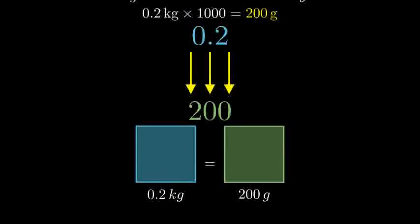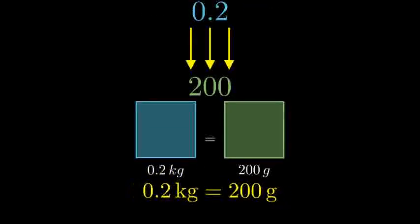So remember, to convert from kilograms to grams, multiply by 1,000, or move the decimal point 3 places to the right. 0.2 kilograms equals 200 grams.